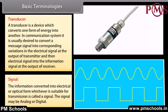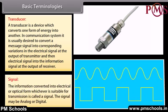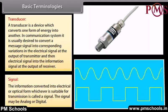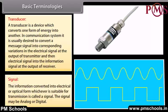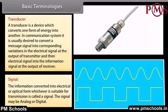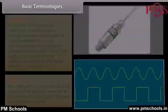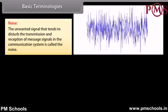Signal: The information converted into electrical or optical form, whichever is suitable for transmission, is called a signal. The signal may be analog or digital. Noise: The unwanted signal that tends to disturb the transmission and reception of message signals in the communication system is called noise.